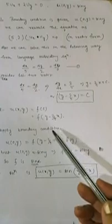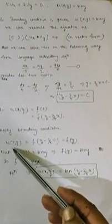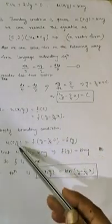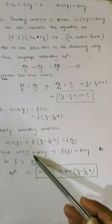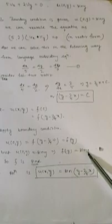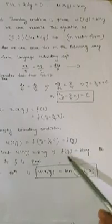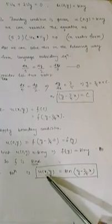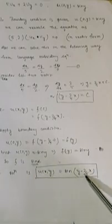Applying the boundary condition u(0, y) = sin y: substituting x = 0 gives f(y − 0) = f(y) = sin y. So the function f is the sine function. Therefore the solution is u(x, y) = sin(y − 2x/5).